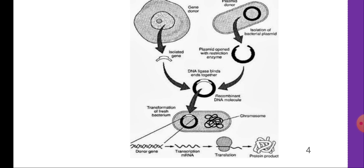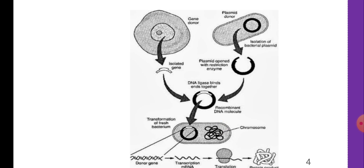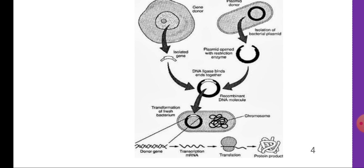In the cloning method, a gene donor and plasmid donor are present. From the gene donor, an isolated gene is obtained. From the plasmid donor, isolation of a bacterial plasmid occurs. The plasmid is opened with a restriction enzyme, and DNA ligase binds the ends together. The isolated gene and bacterial plasmid bind using DNA ligase to form a recombinant DNA molecule. This recombinant DNA is then transformed into a fresh bacterium, which undergoes transcription to form mRNA, and then translation to form the protein product.